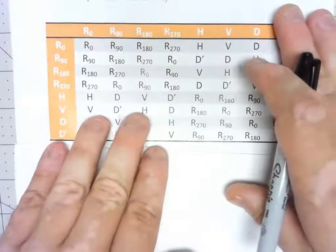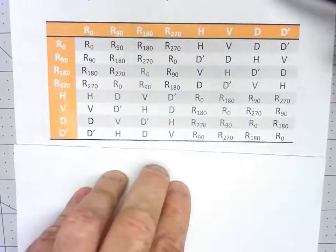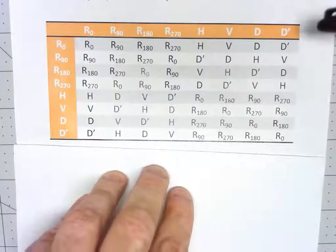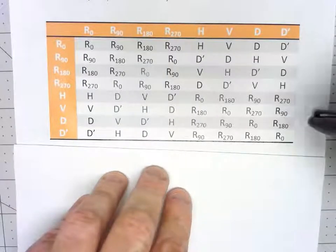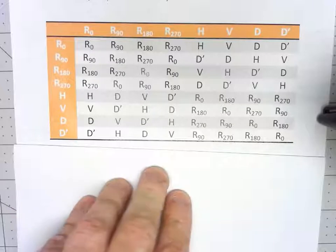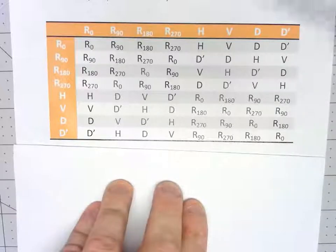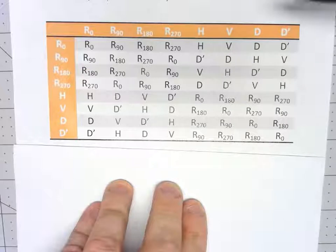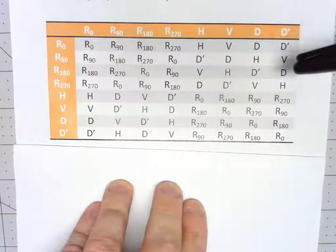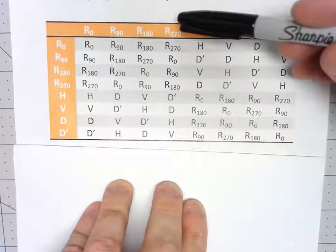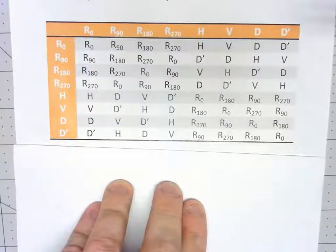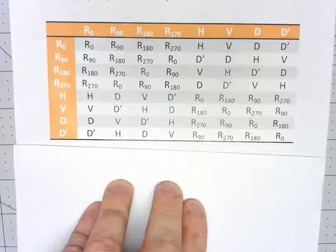It turns out that while this whole idea of commuting with every element might seem a little bit complicated, if we have a Cayley table it's actually really easy. Because to commute with every element of G means that the row and the column that corresponds to that element should be exactly the same things in the same order.